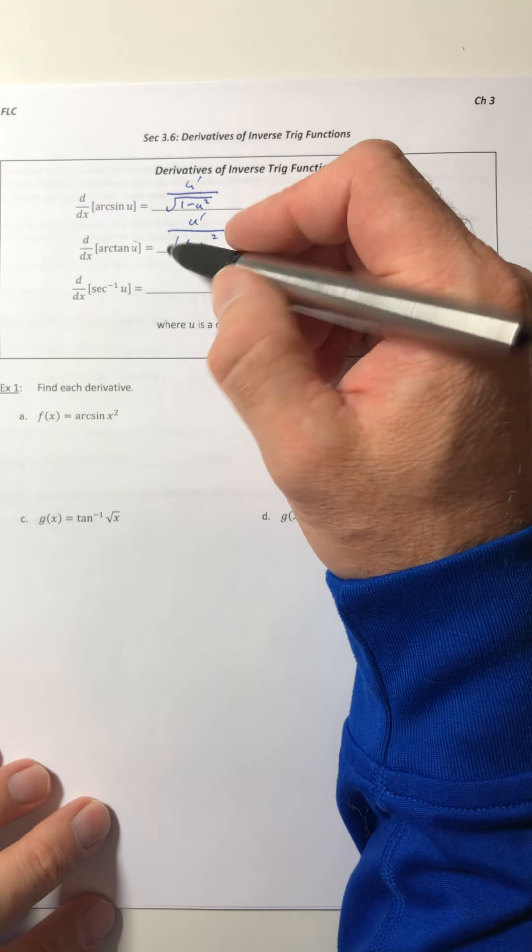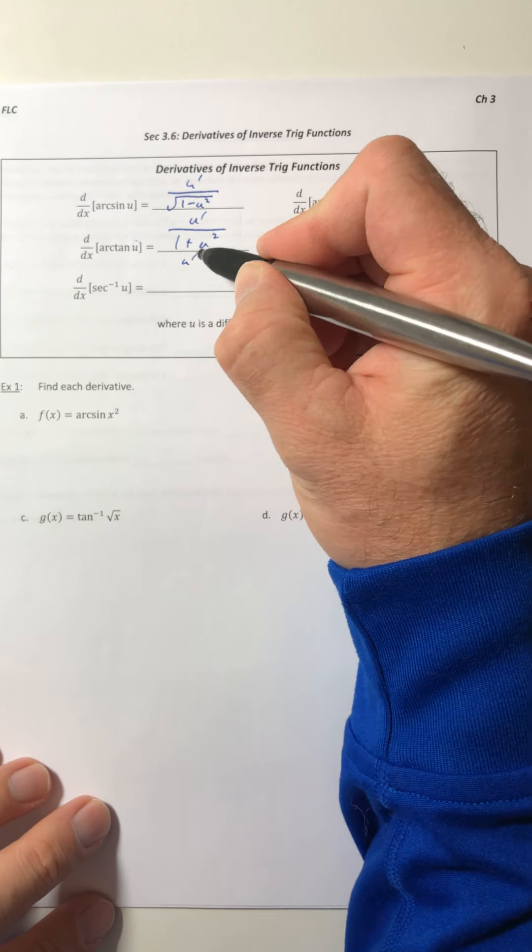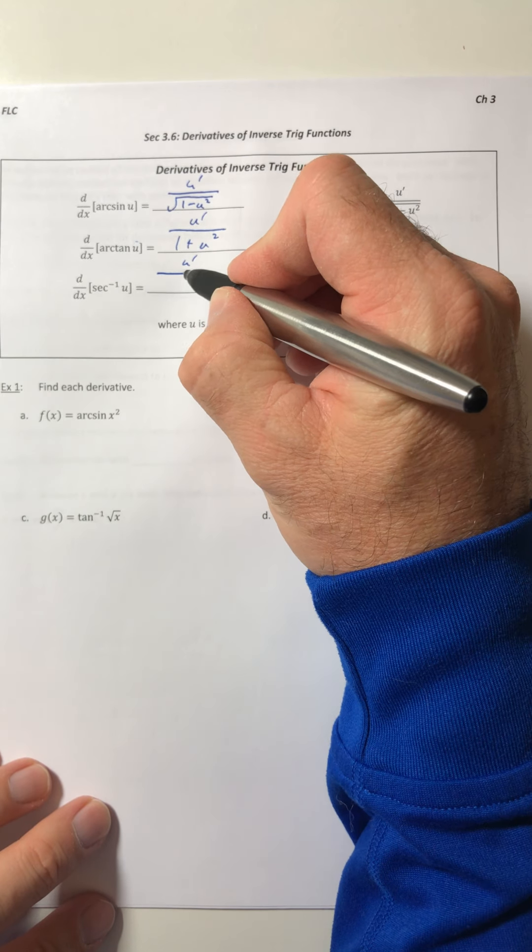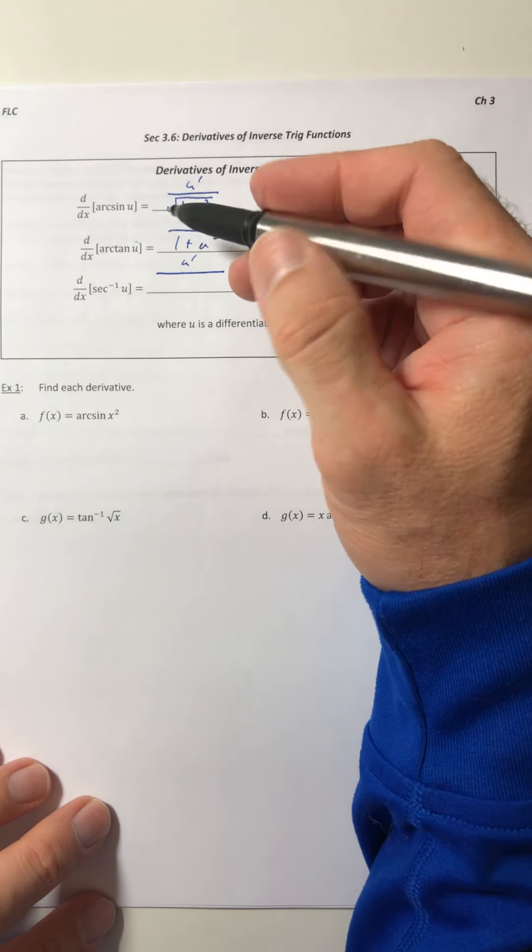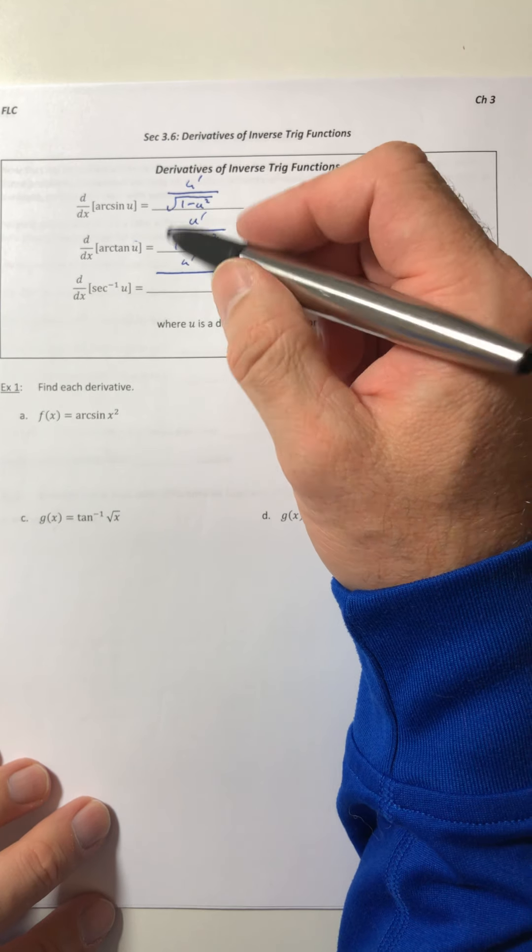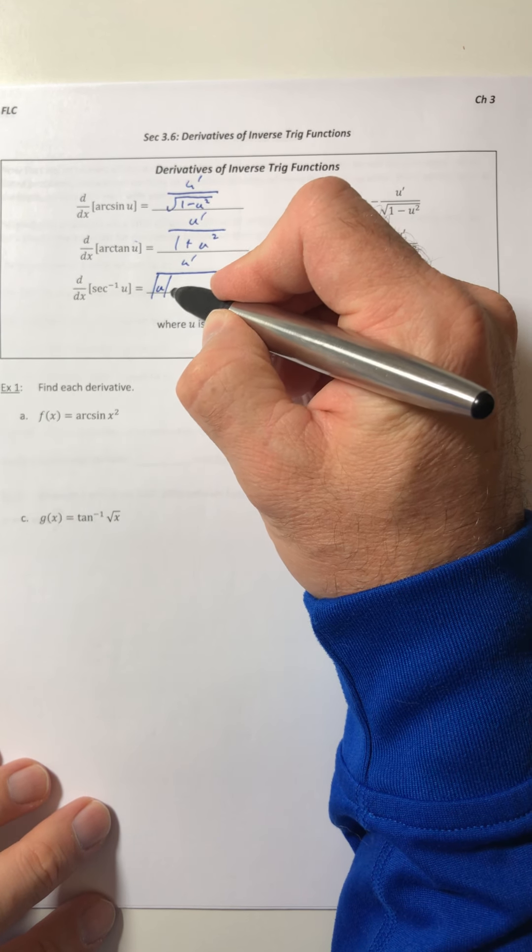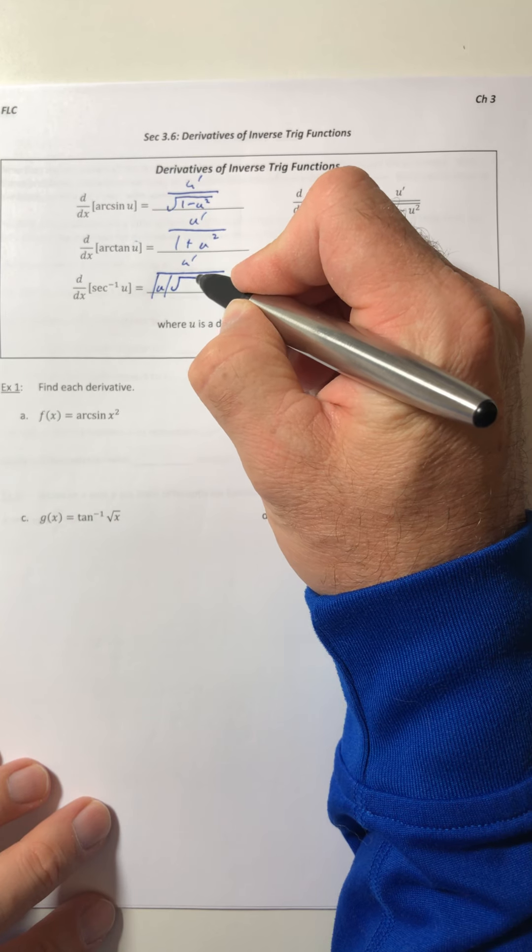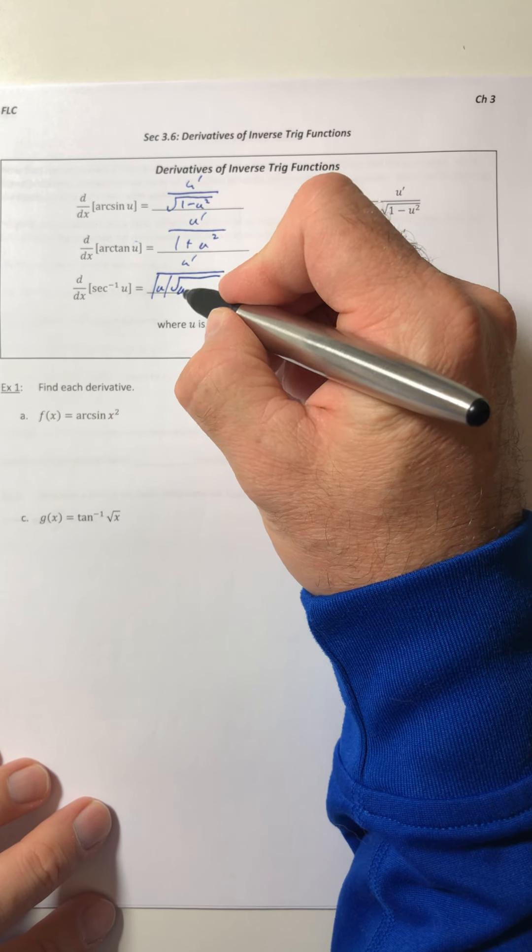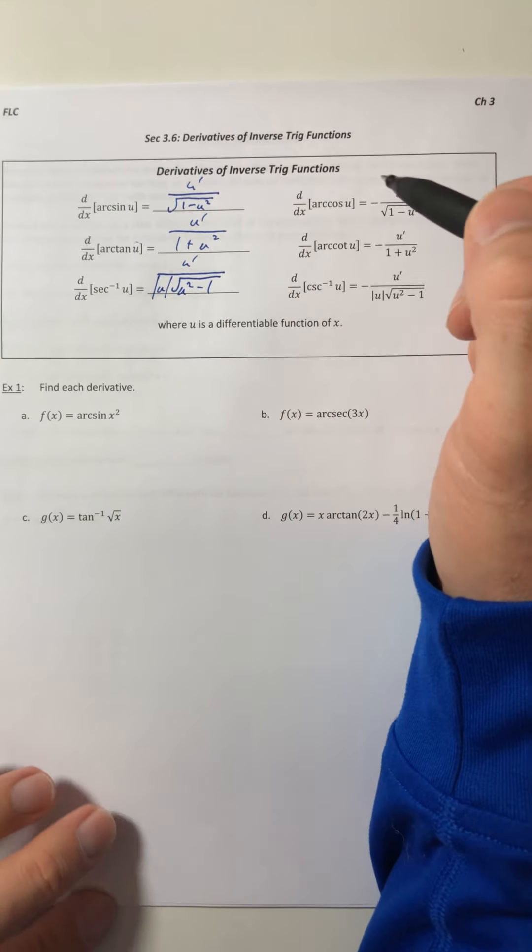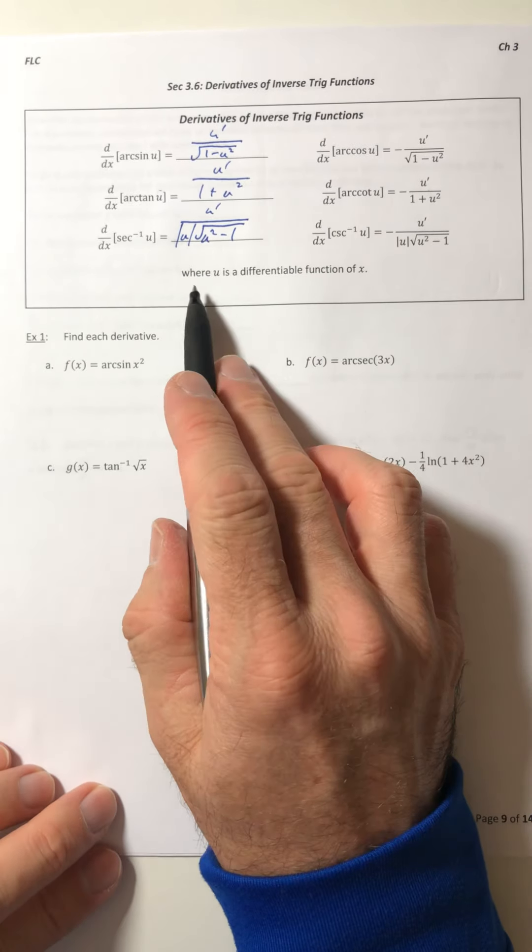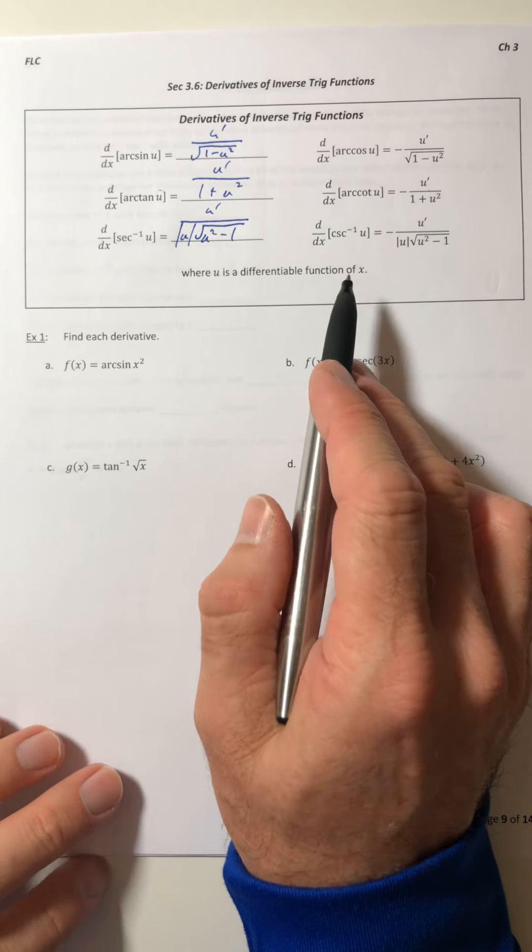And then for arc secant, it has the u prime on top. And then it's over, now this one's a little bit strange, it's going to be the absolute value of u times the square root of u squared minus 1. And we are assuming that u is a differentiable function of x.